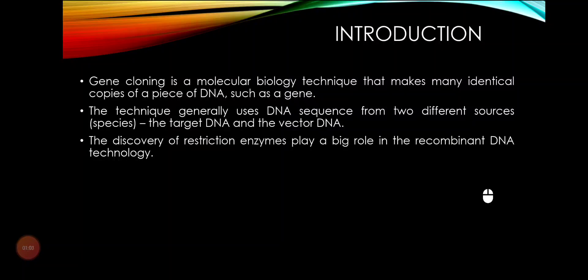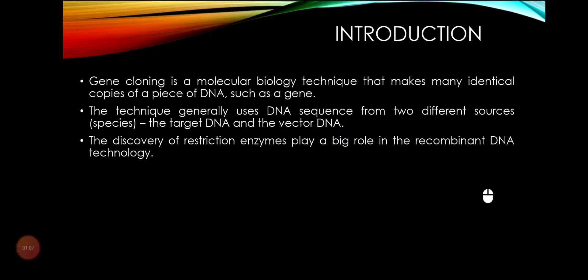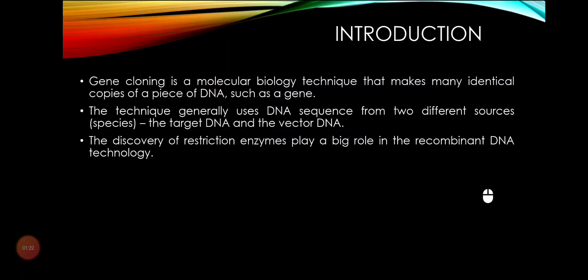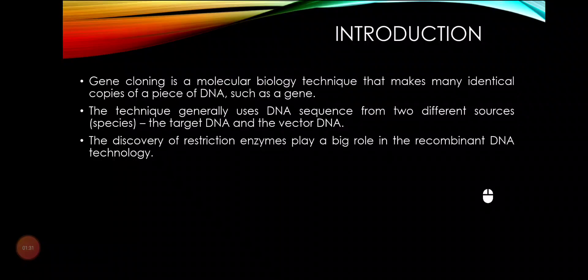This technique uses DNA segments from two different sources — sometimes two different plant or animal species. One is the target DNA and the other is called a vector. Recombinant DNA technology developed from discoveries of bacterial extra-chromosomal DNA, or plasmids. However, it wouldn't have been possible without the availability of restriction enzymes, which play an important role in gene cloning.